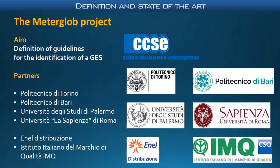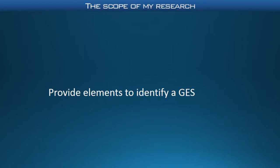The Metaclub project involves four universities — Politecnico di Torino, Politecnico di Bari, Università di Palermo, and Università di Roma La Sapienza — and two companies: IMQ, Istituto Italiano del Marchio di Qualità, and Enel Distribuzione, the main Italian DSO. My PhD research was in the context of the Metaclub project, and had as its main goal to provide elements to identify a GES.